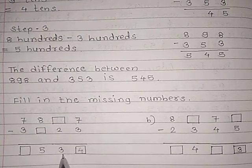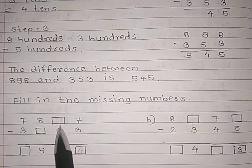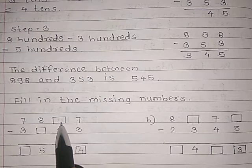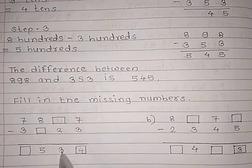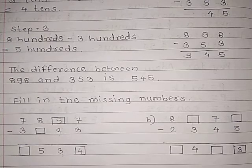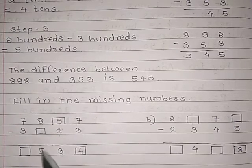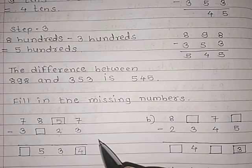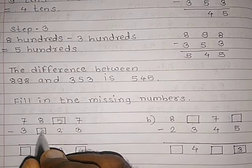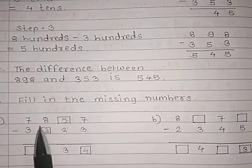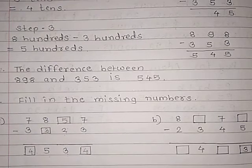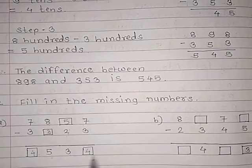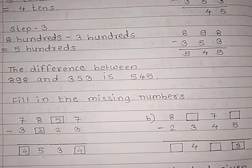Now we have been given the answer as 3 in the tens place. So we need to find the missing digit: blank minus 2 equals 3, which means 5 minus 2 equals 3, so we write 5 here. In the hundreds place, 8 minus blank equals 5, so 8 minus 3 equals 5. In the thousands place, 7 minus 3 equals 4. So the answer is 4534.